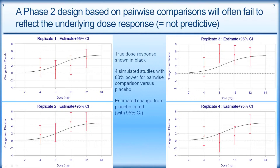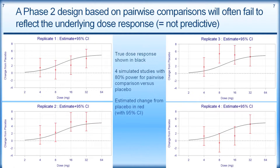To illustrate the problems when we design studies around pairwise comparisons, here are four simulated Phase II studies. The truth is shown with the black line, which is the same in all four plots. The red dots are the mean estimated change from placebo and the 95% confidence interval across four dose levels: 4, 8, 16, and 32. We don't typically see the black line - we only see the red. So what would be our interpretation of this type of result? It's really problematic.